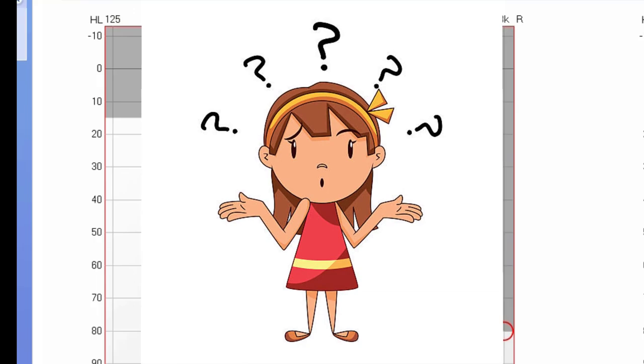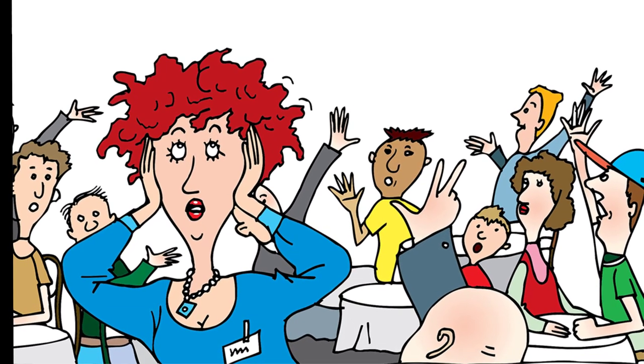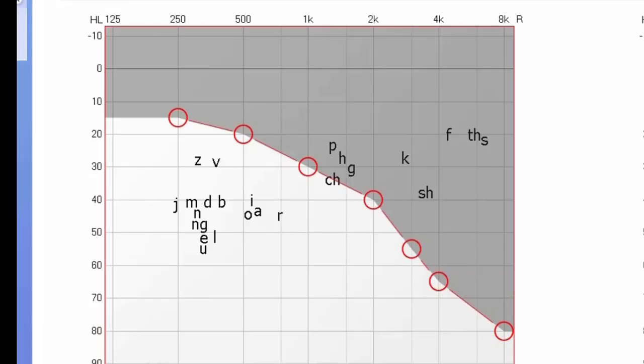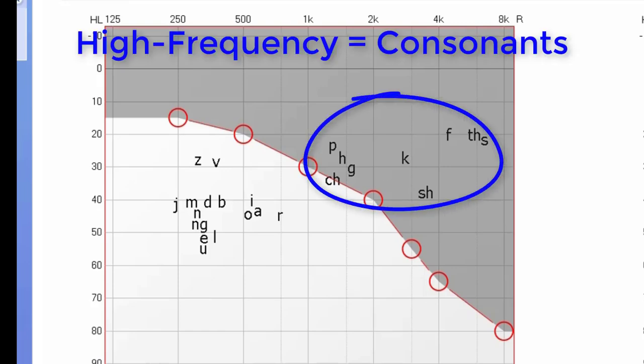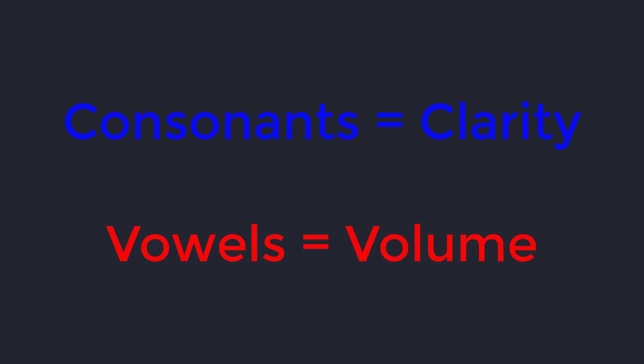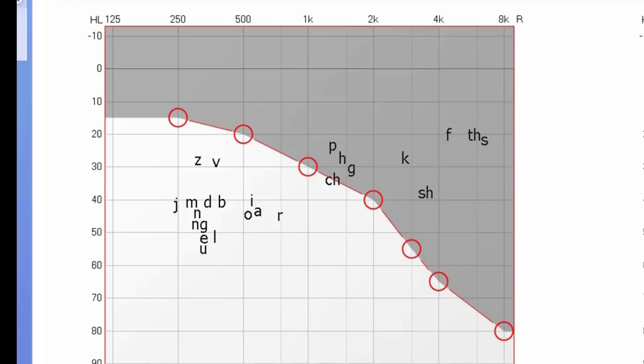First, they feel like they can hear people talking but they just can't understand them. Second, they typically report hearing difficulty in background noise. Let's take a look at why someone would report difficulty with speech understanding, otherwise known as speech clarity. The high frequency sounds are the consonant sounds. The low frequency sounds are the vowel sounds. Consonants equal clarity. Vowels equal volume. When your brain loses access to high frequency consonant sounds, clarity goes away and it starts to sound like people are mumbling.